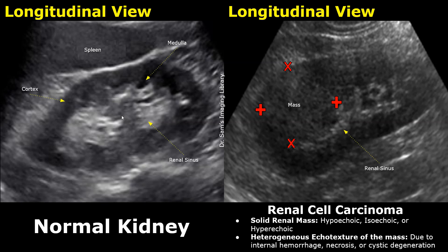On the left is the image of a kidney in the longitudinal plane. This is the left kidney, so we have a part of the spleen next to it. This outer hypoechoic layer is the cortex. The inner region, which is even more hypoechoic than the cortex, is the medulla. The central hyperechoic region is the renal sinus.